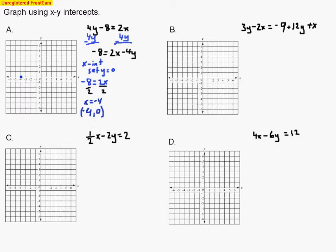Let's take a look at the y-intercept. When finding the y-intercept, I want the value of x to equal zero, because when I'm on the y-axis I don't go left or right — I stay right on that axis. So for the y-intercept I set x equal to zero. That cancels out the x term, leaving negative 8 equals negative 4y. Dividing by negative 4, I'm left with the value of y all by itself, which equals 2.